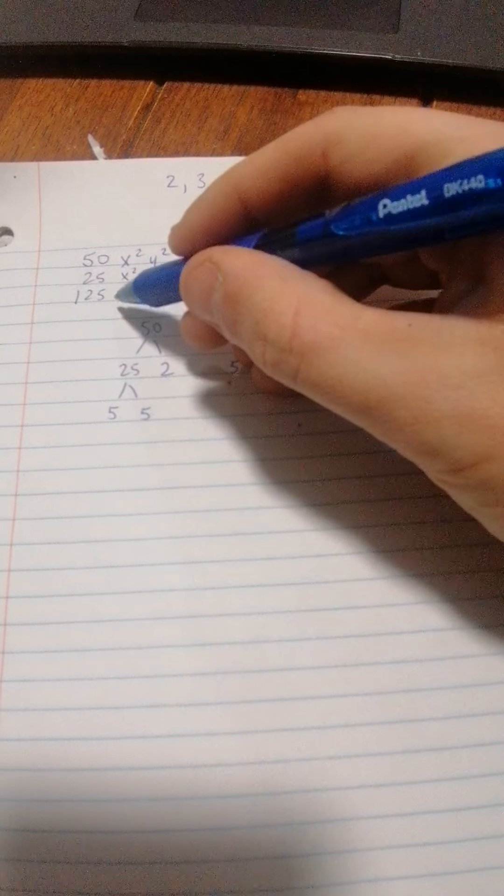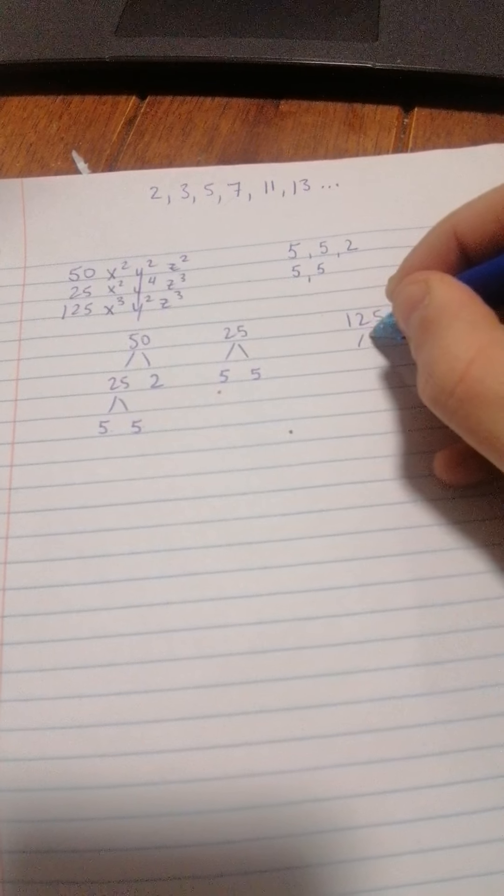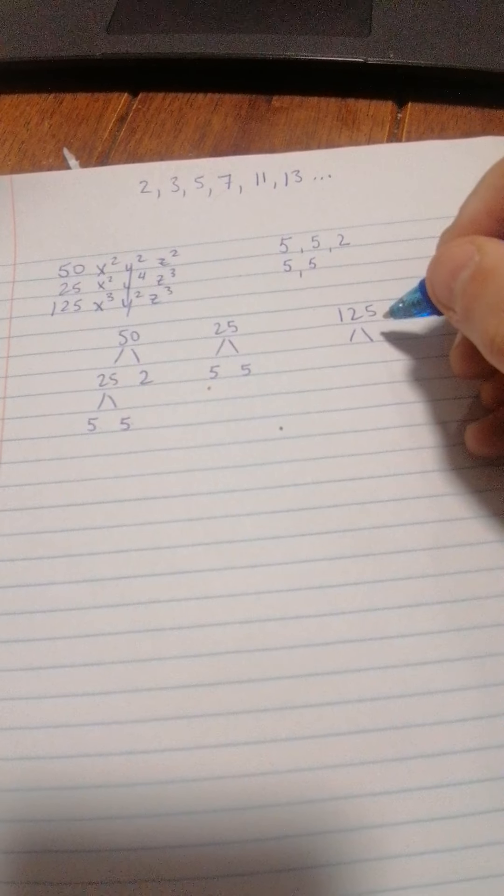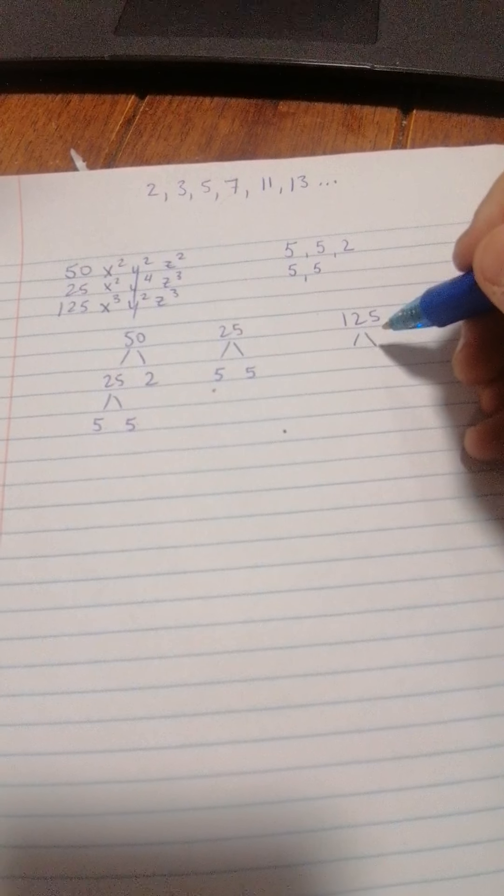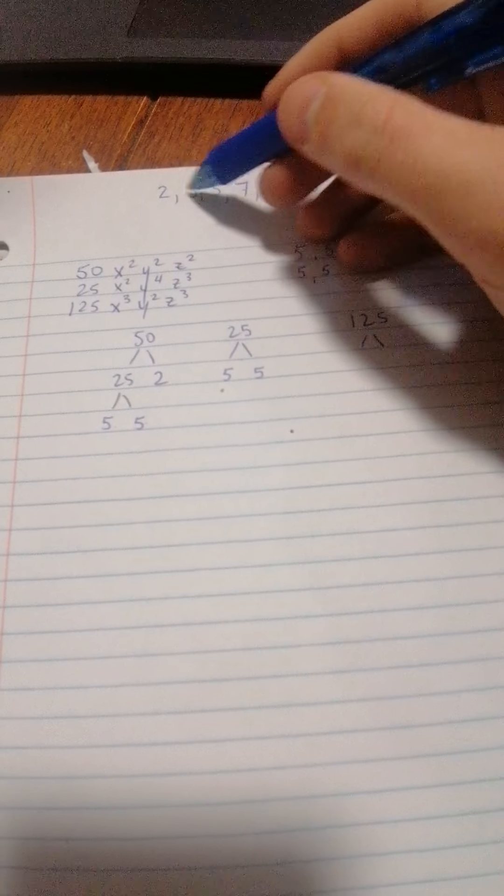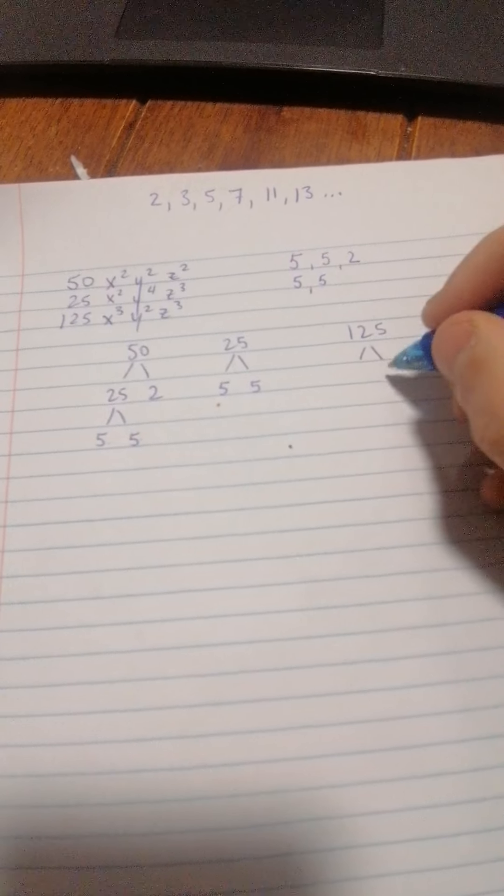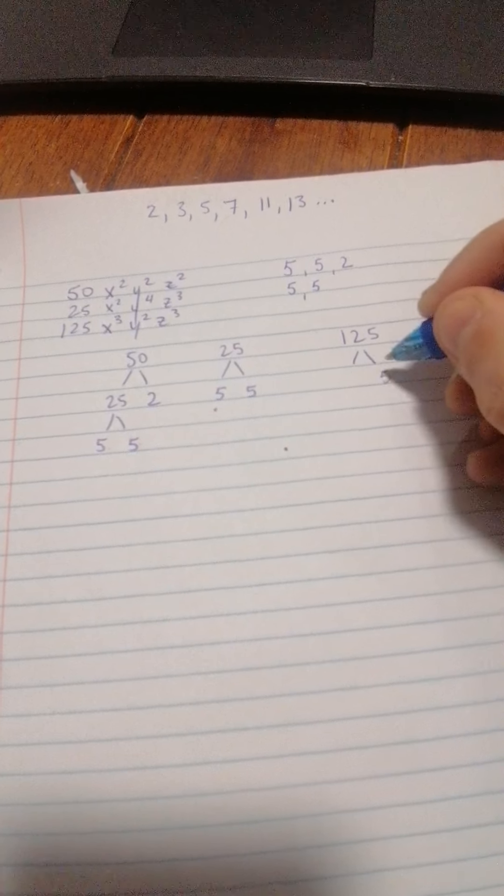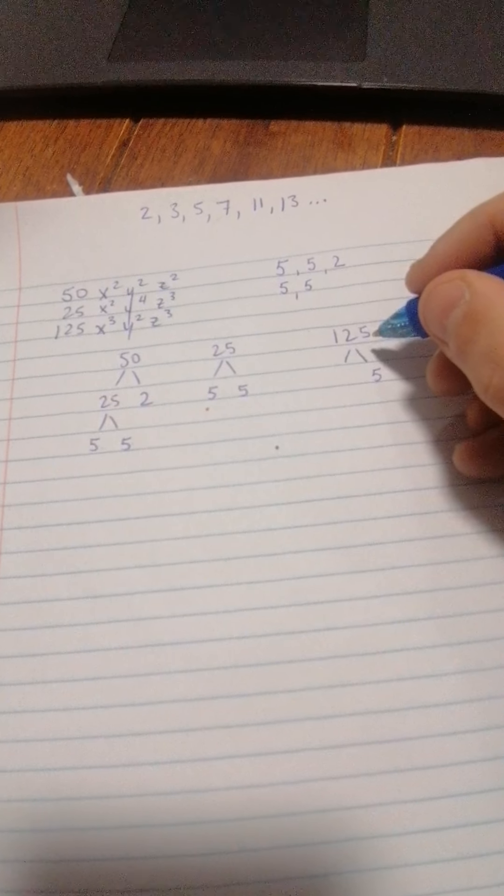And now the third one, we're doing it for 125. Now you could get a calculator and try to divide it by 2. Won't work evenly. 3 won't work. Again, 5 works.